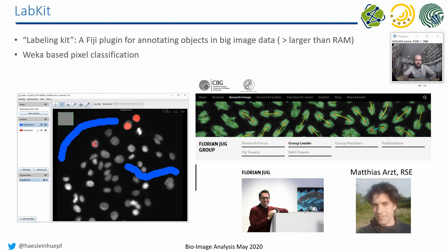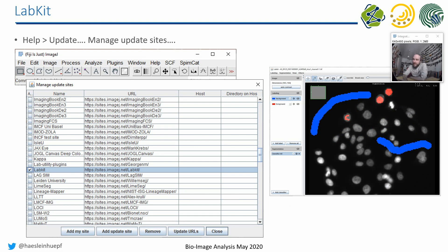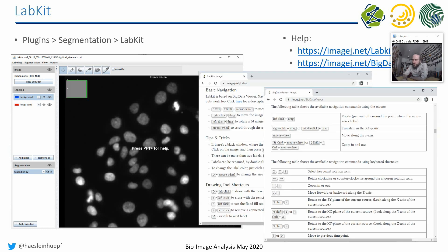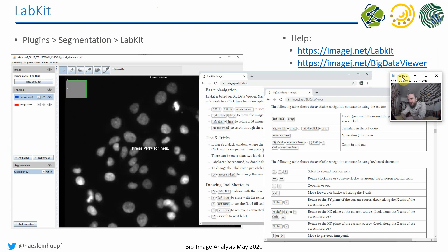People in the MPI-CBG BigDataViewer group started working on this and called it the Labeling Kit, or LabKit. You can install it by activating the LabKit update site. When you start it for the first time it says you can press F1, but unfortunately the F1 key doesn't work. There are two websites that can help you with shortcuts — imagesale.net/labkit and the BigDataViewer website. The viewer used to display cells in LabKit is actually the Big Data Viewer, which is why it works with big data.